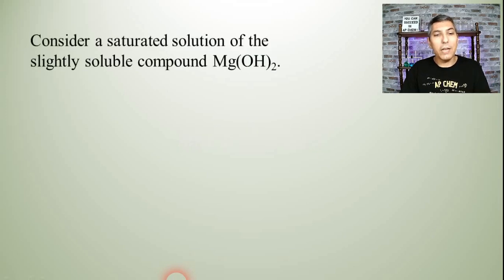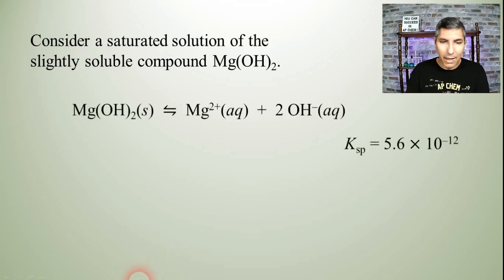As we take a look at pH and solubility, let's start by considering a saturated solution of a very slightly soluble compound. Magnesium hydroxide is not the most soluble thing in the world, but let's imagine that we have a saturated solution of that. So here I have written the equation for the dissociation of magnesium hydroxide. And we have its Ksp value, as we learned about back in Unit 7. It's a fairly small number, which means that magnesium hydroxide is not really soluble.